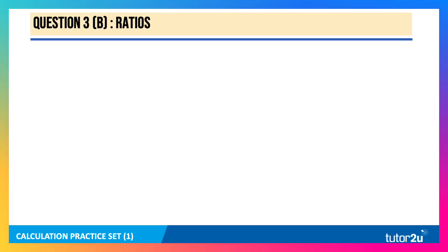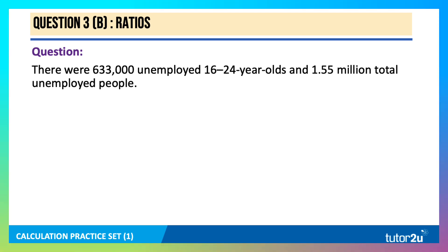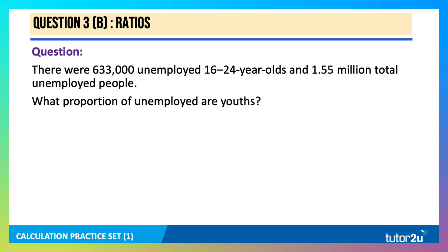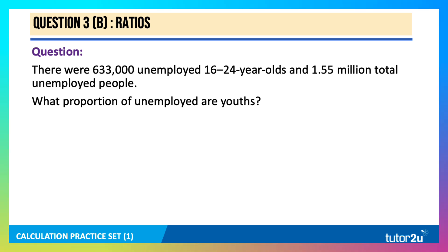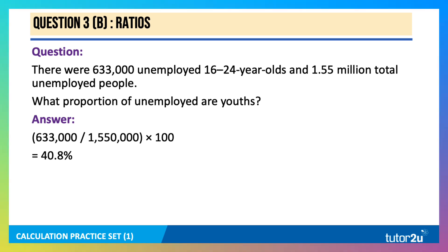Here's a second ratio question. There were 633,000 unemployed 16 to 24-year-olds and 1.55 million total unemployed people in the UK. What proportion of the unemployed are youths aged 16 to 24? The calculation is 633,000 divided by 1,550,000, multiplied by 100, giving 40.8% — a reflection that youth unemployment is a significant problem in the UK labour market.